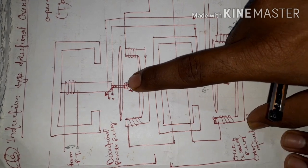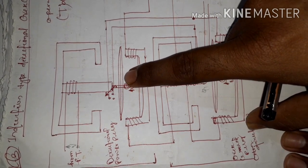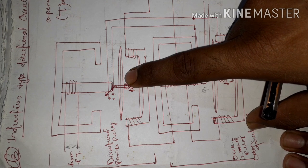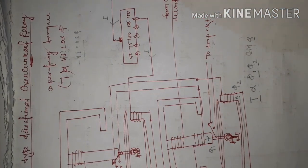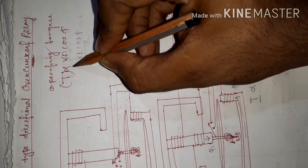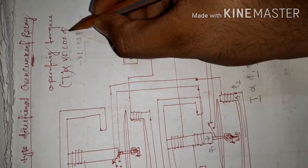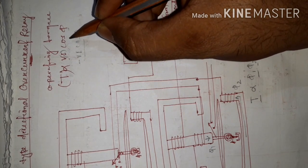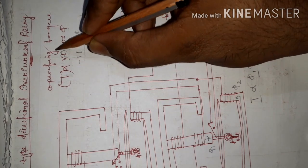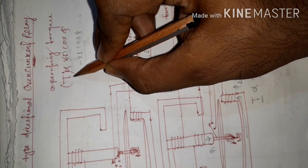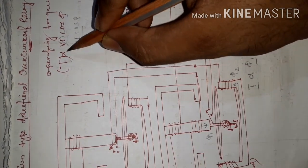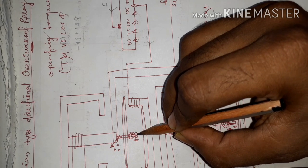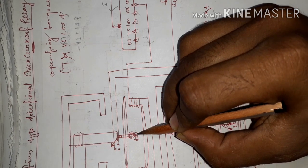The operating torque developed in the upper half, that is the directional power relay, can be written as T is proportional to VI cos φ, where φ is the phase angle between voltage and current. Under normal operating condition this operating torque is positive and is less than the restraining torque provided by the spiral spring.